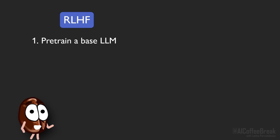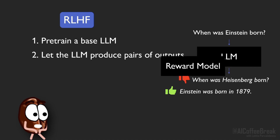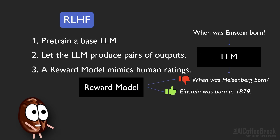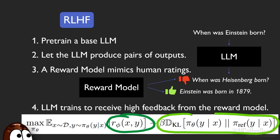First, we have the base LLM, the one we trained to auto-complete sentences from large text corpora. Then we let the LLM produce pairs of answers to various questions, and humans rank the outputs according to quality. A copy of the LLM trains to become a reward model by learning to mimic the human ratings. And finally, the LLM trains with feedback from the reward model to produce high-ranking outputs, but also while being constrained not to drift away too much from the original model.